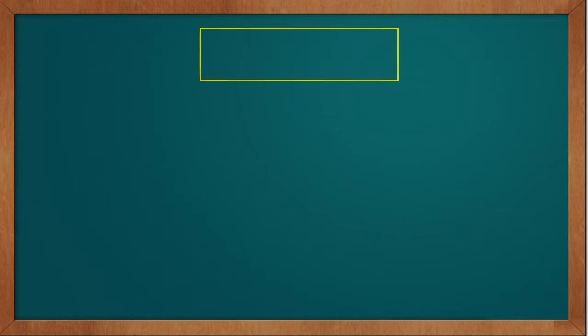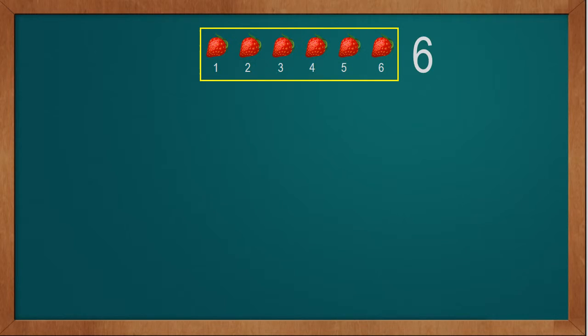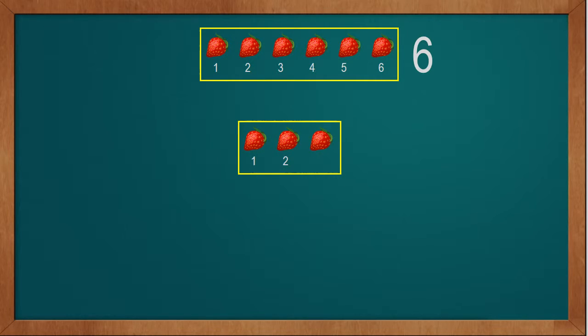To understand comparison, we will take the example of strawberries. We will take 6 strawberries: 1, 2, 3, 4, 5, 6. We have a total of 6 strawberries. Now we have 3 more strawberries: 1, 2, 3. We have a total of 3 strawberries.